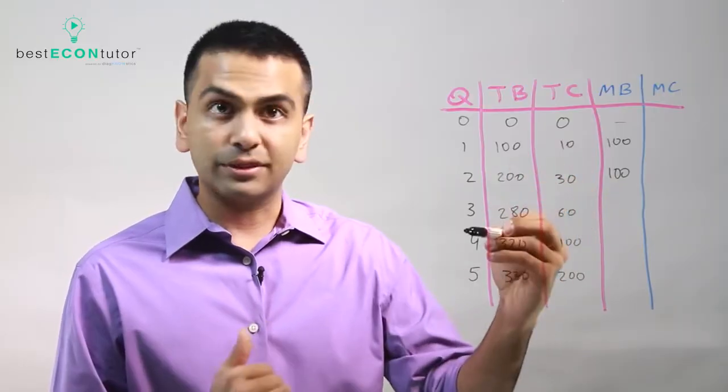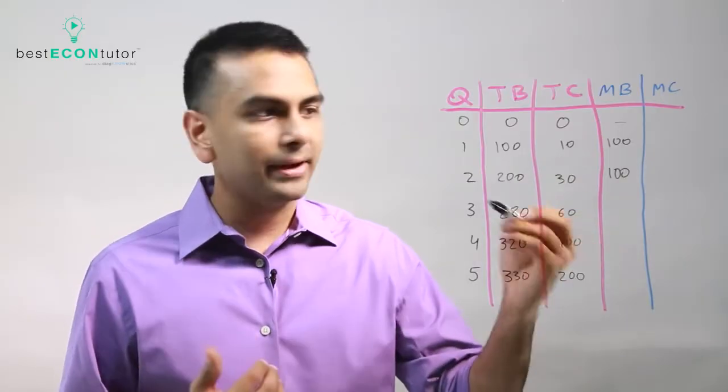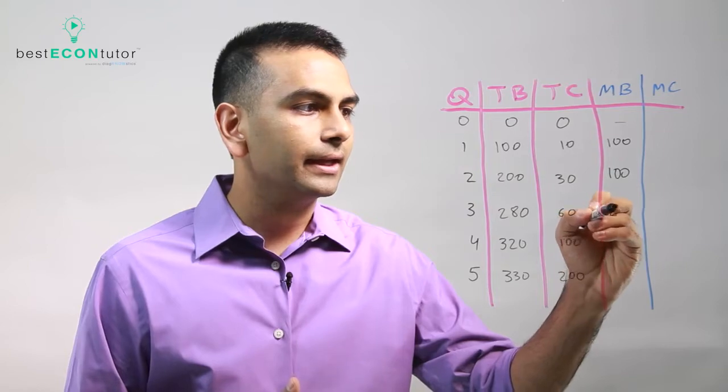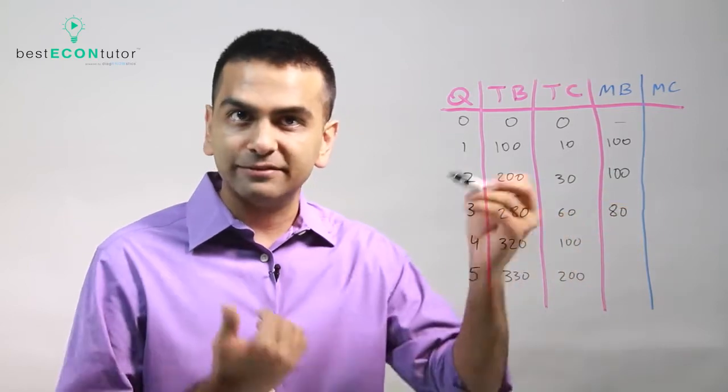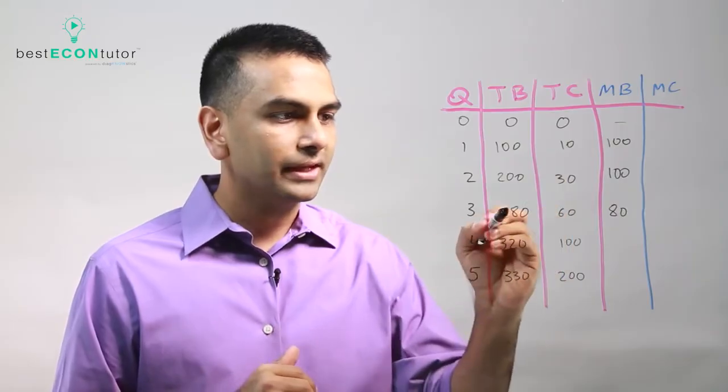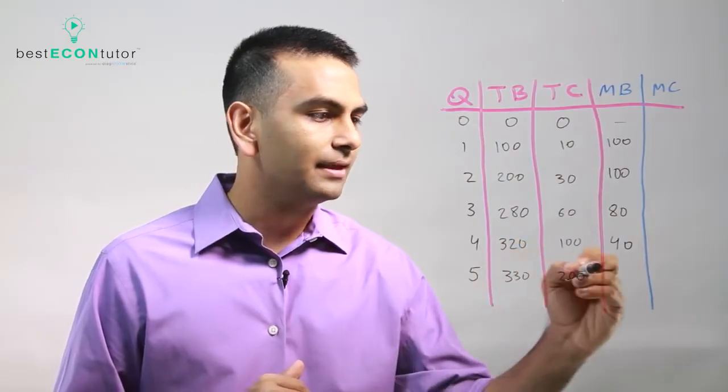Here, going from two to three houses you went from a benefit of two hundred to two eighty, so that went up by eighty. We can say that the third one alone added an eighty dollar happiness - you got an eighty dollar benefit from going to the third house alone. Marginal is the next one, so here to here, 280 to 320, that's 40, and that's going to be 10.